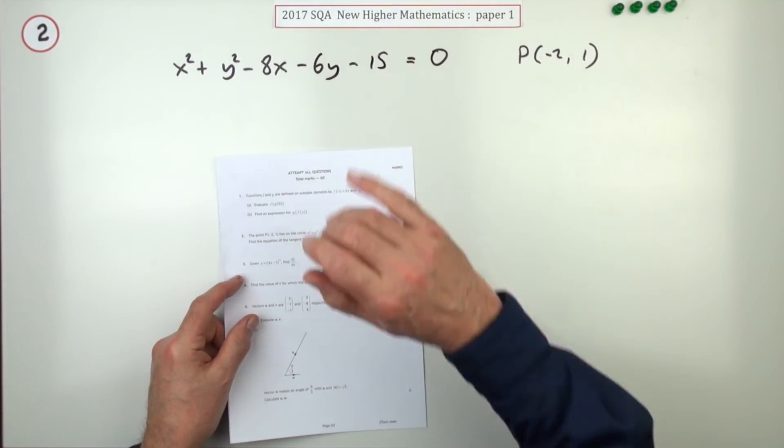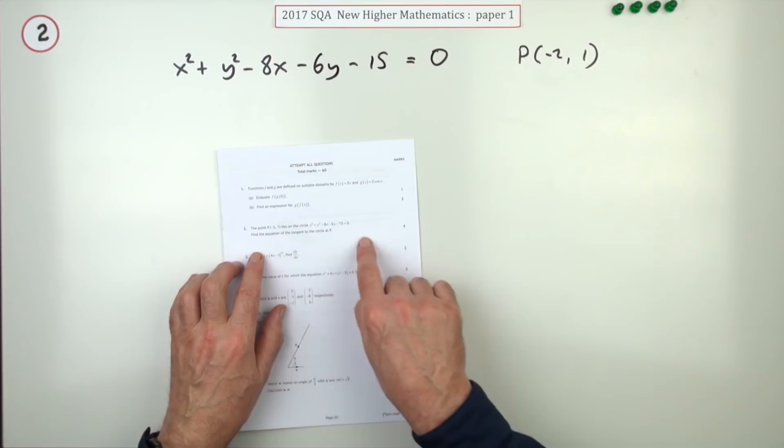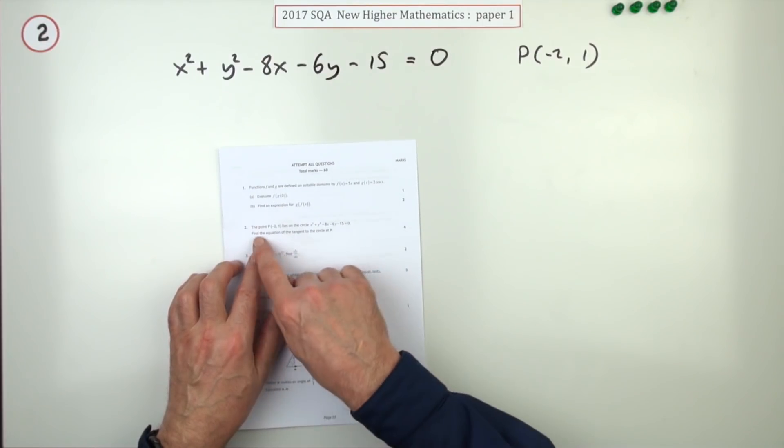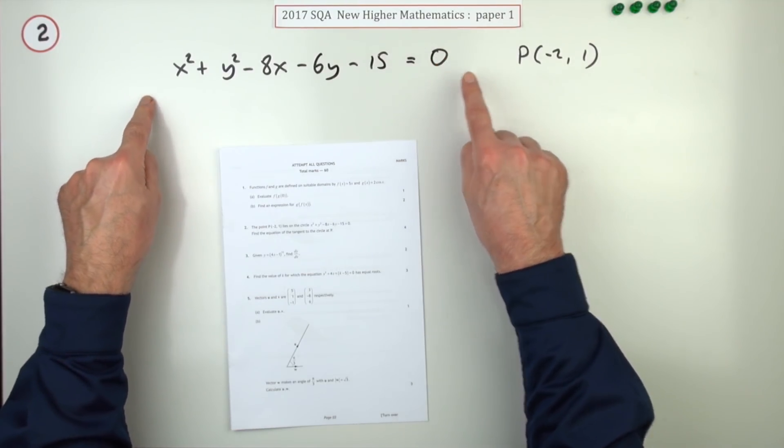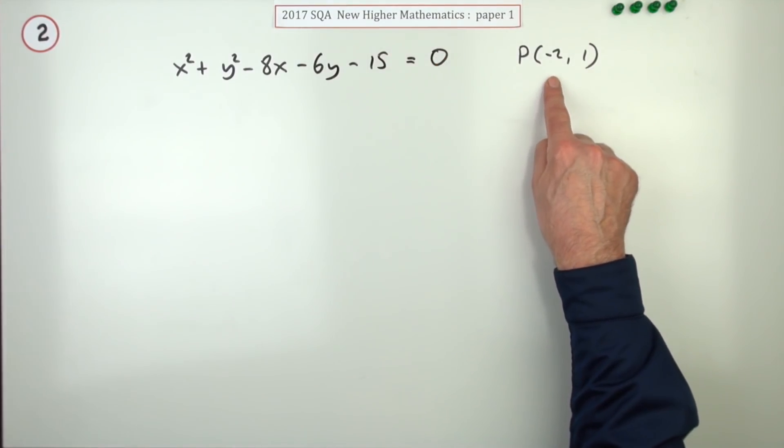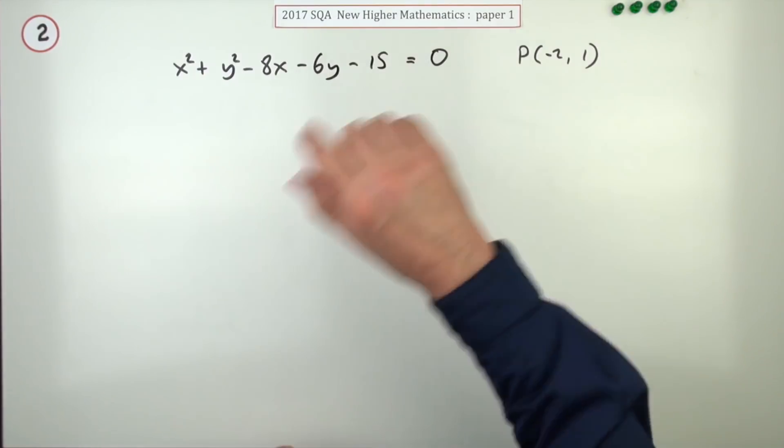Question 2 from paper 1 of the 2017 Higher Maths. A four-mark question this time. Find the equation of the tangent to a circle. Here's the equation of a circle. The tangent to that circle at this point, which you're going to assume correctly lies on the circle.